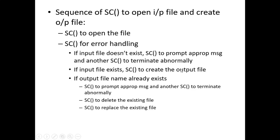Creating the output file also requires its own error handling. For example, if the output file name already exists, the OS issues a system call to display a message about it, then another system call to terminate abnormally. Alternatively, the OS might issue a system call to delete the existing file, or another to replace it with the new file.